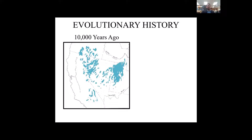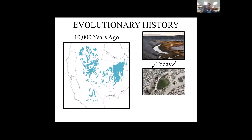Approximately 10,000 years ago, this is what the area looked like where my species inhabits. There were large bodies of water with lots of connectivity and a climate suitable for keeping those large bodies of water. Nowadays, it is much hotter and much drier in this area, and a lot of the water has receded. There's a lot less connectivity between the water pockets, and it's created what are coined as aquatic islands.